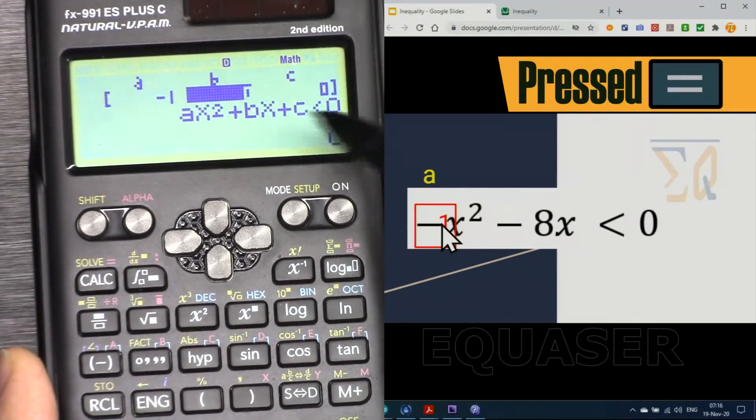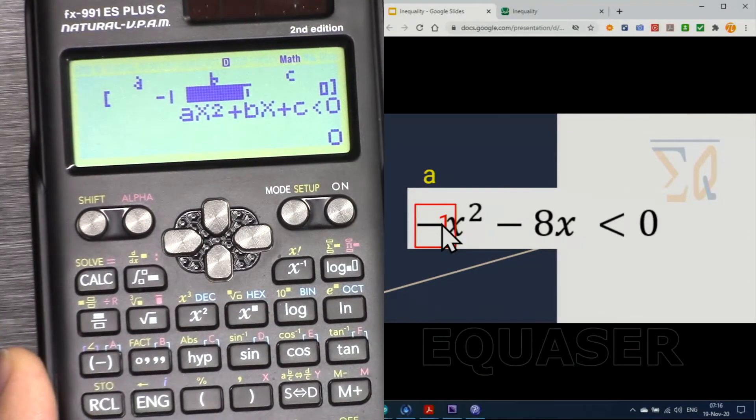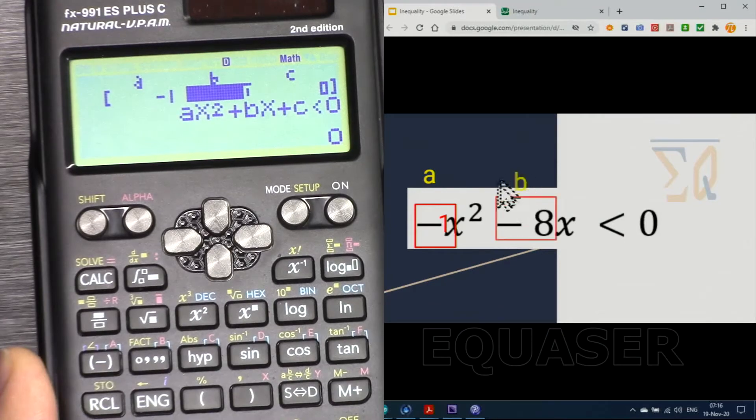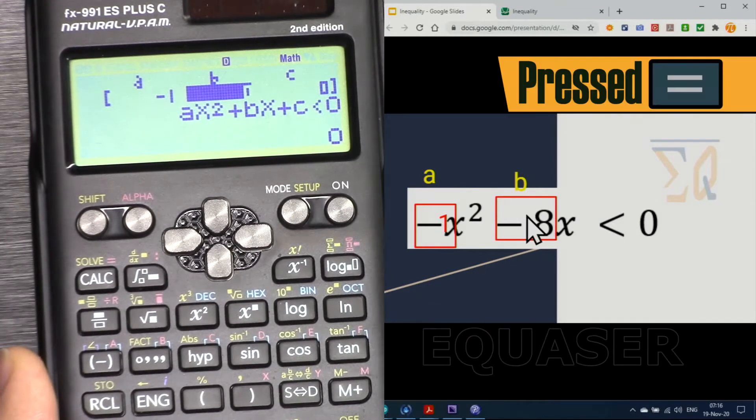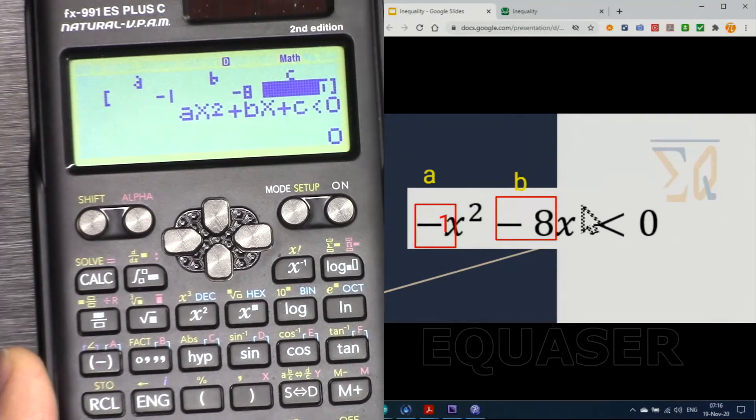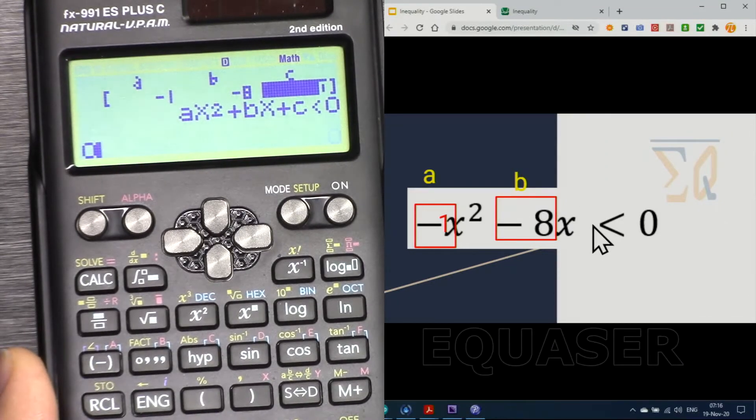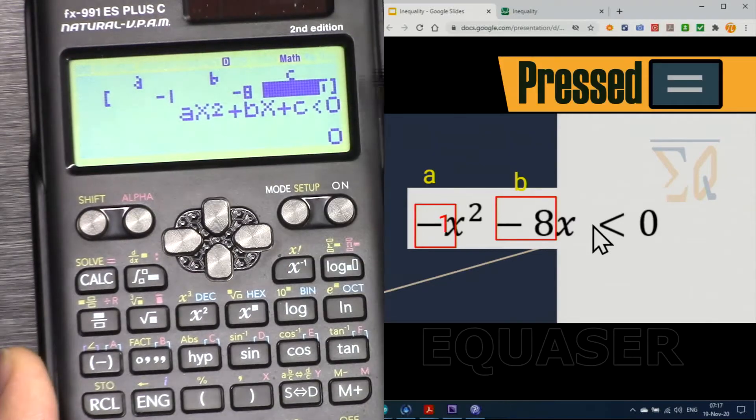First we will enter for the a coefficient of the highest term -1. I am pressing minus and then 1, and then equal. It moves to the next one, and then B is -8, minus 8 and equal.